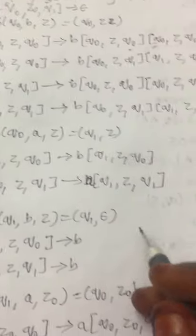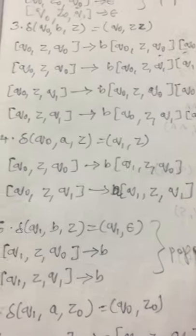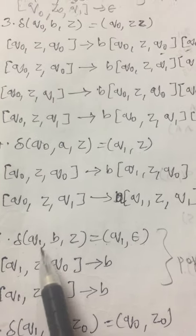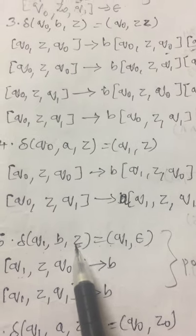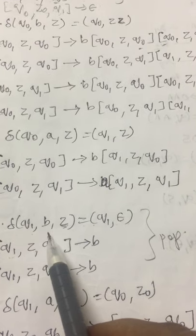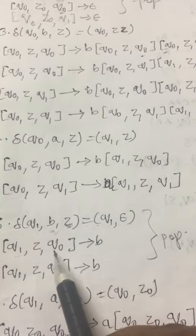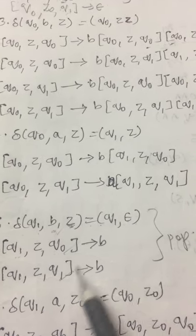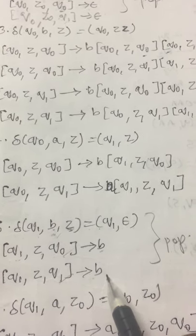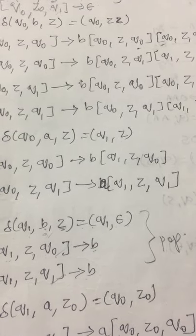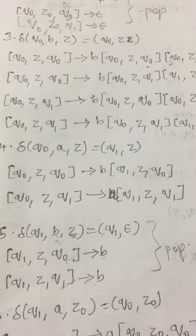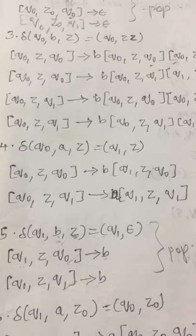Let us see another pop operation step. δ(Q₁, b, Z) = (Q₁, ε). So Q₁ Z Q produces terminal symbol b. Once we write Q₁ Z Q₀ produces b, and the other time Q₁ Z Q₁ produces b — since Q in the algorithm represents all states Q₀ and Q₁. This is the complete procedure to convert a given PDA to CFG. I hope it is clear and you understood the concept. Thank you.